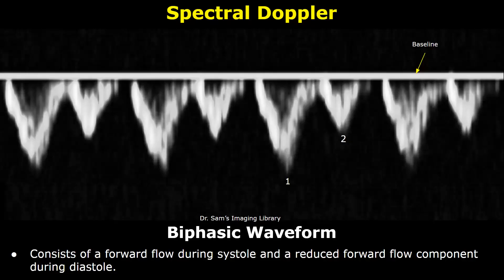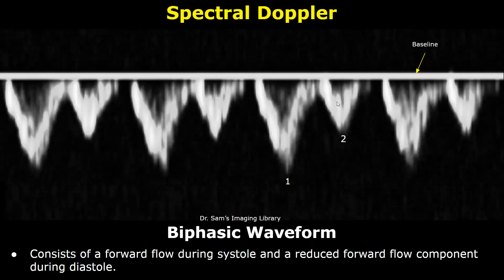Usually in veins we find flow below the baseline because the blood is moving away from the probe. This waveform is from a hepatic vein, so you may find the waveforms being below the baseline due to the direction of the blood with respect to the ultrasound probe. This is also considered a biphasic waveform because we see two prominent components — one is a sharp systolic peak and the other one is forward diastolic flow. These types of waveforms can be a bit tricky in deciding whether they are biphasic or not, but if we see two prominent but different components, you can consider it a biphasic waveform.